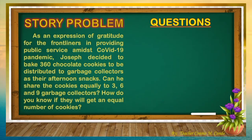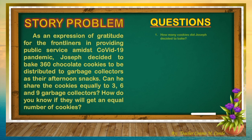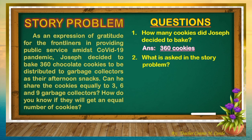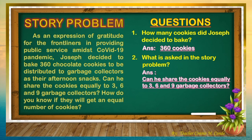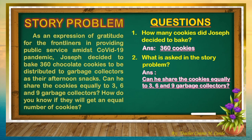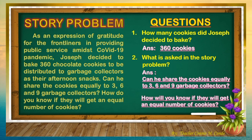Let us answer the following questions based on our story problem. The first question is: How many cookies did Joseph decide to bake? The answer — very good — 360 cookies. Second question: What is asked in the story problem? There are two questions: Can he share the cookies equally to 3, 6, and 9 garbage collectors? And, how will you know if they will get an equal number of cookies?